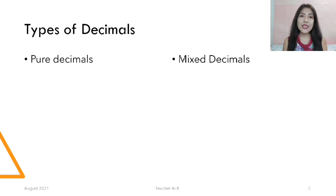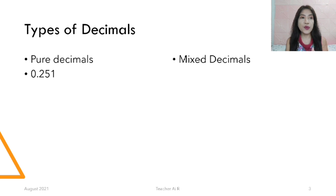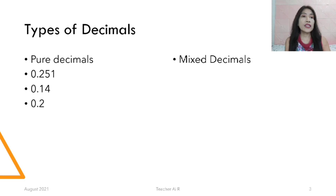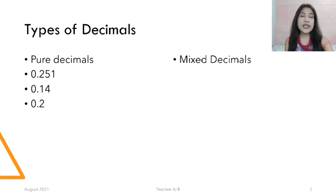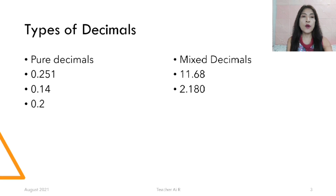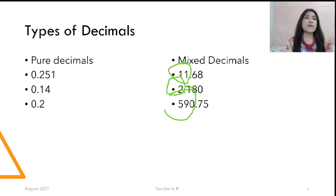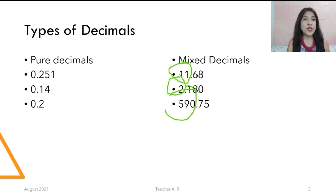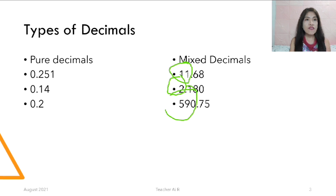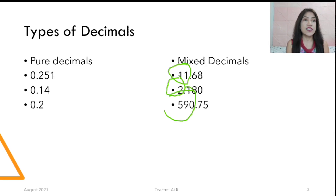There are two types of decimals: pure decimals and mixed decimals. When we say pure decimals, they are purely decimals — they have no whole number with them, like 0.251, 0.14, and 0.2. When we say mixed decimals, we have examples like 11.62, 2.180, and 590.75. Mixed decimals have a whole number with them, like 11, 2, and 590.